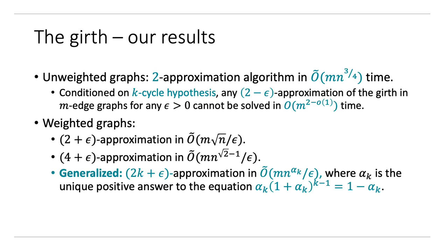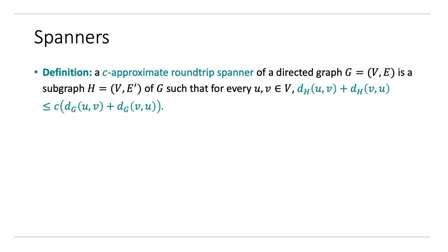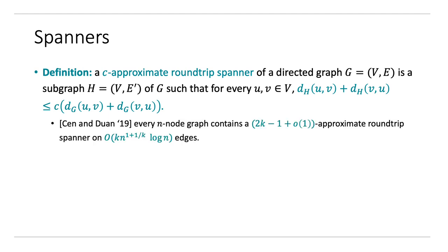Before going into more details about these results, let's have a quick detour to round-trip spanners. Spanners in undirected graphs approximate pairwise distances between nodes; the equivalent in directed graphs is round-trip spanners. In 2019, it was proved that every N-node graph contains a (2K minus 1 plus little-o of 1)-approximate round-trip spanner on order KN to the 1 plus 1 over K times log N edges. The little-o of 1 error can be removed if edge weights are at most polynomial in N, and the result is then optimal up to log factors under the Erdős girth conjecture.